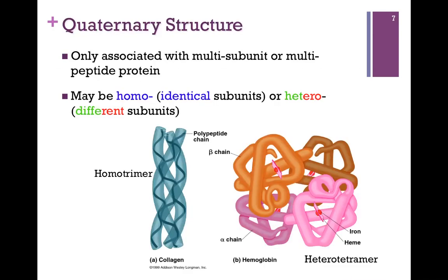Finally, we look at the last level of protein structure: quaternary structure. This only applies to proteins composed of more than one polypeptide chain, and it describes how those chains are associated in three-dimensional space. Proteins may be composed of identical subunits — for example, collagen on the left contains three identical subunits, making it a homotrimer. Hemoglobin on the right has four subunits — a tetramer — with two different subunit types, two of each, making it essentially a dimer of dimers.